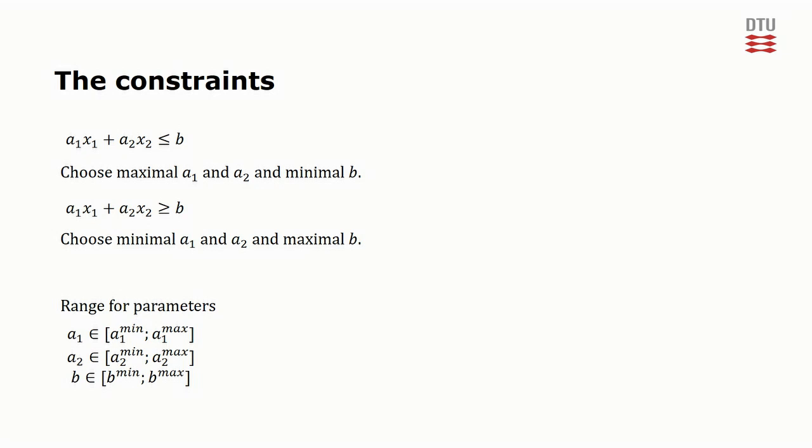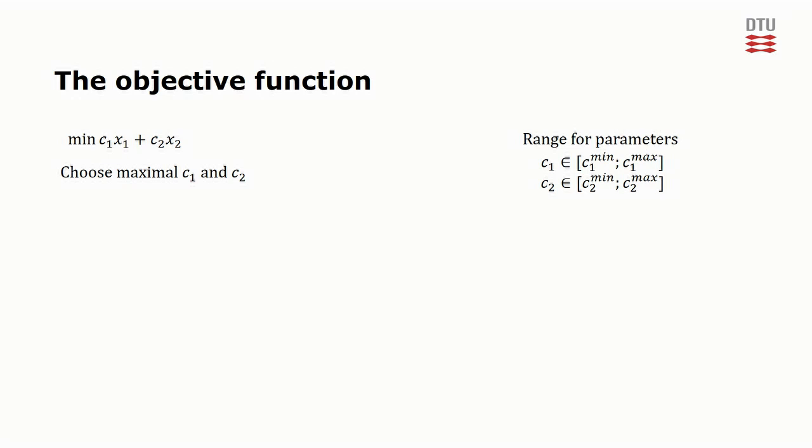Robust optimization can also be used to analyze the objective function. Here the idea is to give the most conservative guess on the optimal objective value. If we, for example, want to minimize this objective with these ranges for the parameters c1 and c2, we would choose to use c1 max and c2 max to get the most conservative guess on the objective value. If we wanted to maximize the objective, we would of course use c1 min and c2 min.